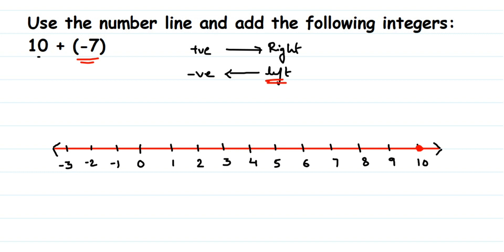So seven times I go towards the left side: one, two, three, four, five, six, seven. The answer will be three. If it's a negative integer, go towards the left side. If it's positive, move towards the right side. Since we have landed at three, this means 10 plus minus 7 is 3.